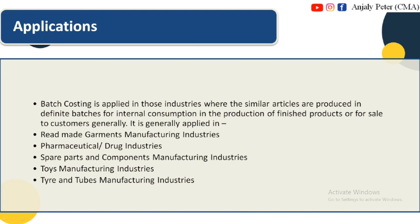Batch costing is applied in those industries where similar articles are produced in definite batches for internal consumption in the production of finished goods or for sale to customers. Examples include: readymade garments manufacturing industries, pharmaceuticals and drug industries, spare parts and components manufacturing industries, and toys manufacturing industries, tires and tube manufacturing industries.